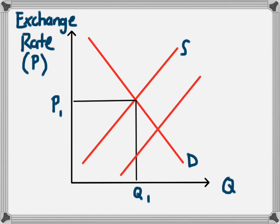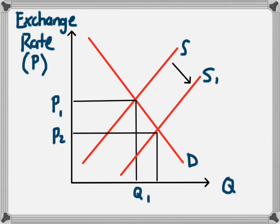So the supply would increase from S to S1 — a shift in the supply curve, a movement to the right — and the increase in supply will lead to a depreciation in the currency. In addition to buying imports, this could be people in this country wanting to invest their money overseas and needing to convert their dollars, or if they are tourists travelling out of this country into another country and supplying their own currency in order to exchange it for another currency.